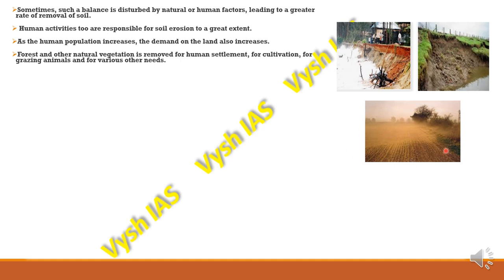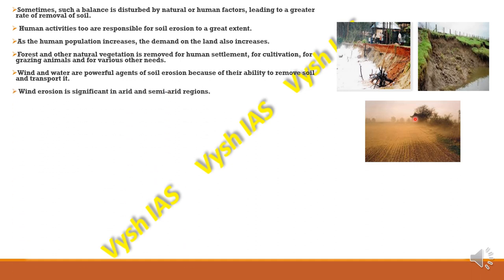Wind and water are powerful agents of soil erosion because of their ability to remove and transport soil. Wind erosion is significant in arid and semi-arid regions because vegetation is very poor there — not enough trees or plants to hold the soil in place. Tree roots hold the soil tightly together, much like fingers curling around sand.